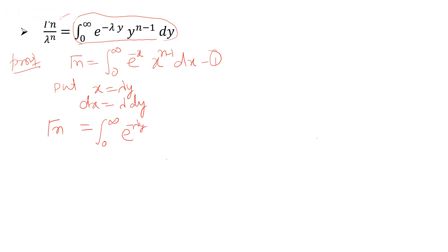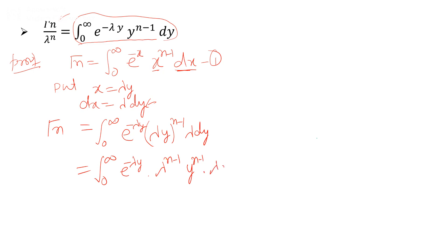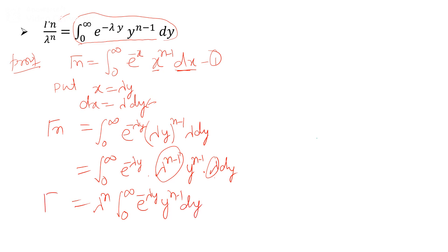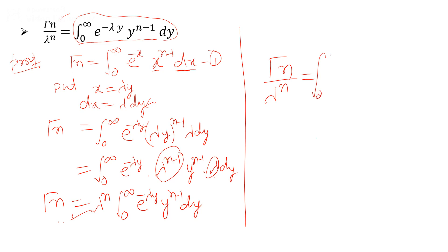After substitution, we get the integral from 0 to infinity of e raised to power minus λy, (λy)^(n-1), times λ·dy. The power of λ becomes (n-1)+1 = n, so λⁿ is taken as a constant outside: Gamma(n) = λⁿ times the integral from 0 to infinity of e raised to power minus λy, y raised to power n minus 1, dy. Therefore the integral equals Gamma(n)/λⁿ.